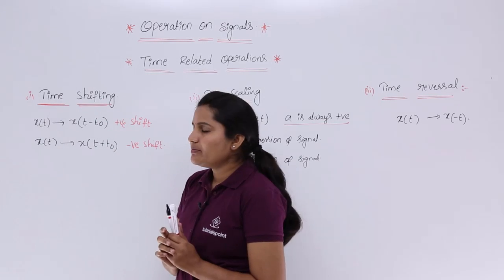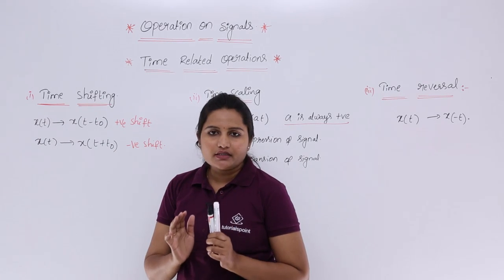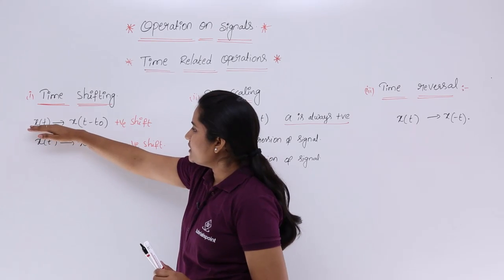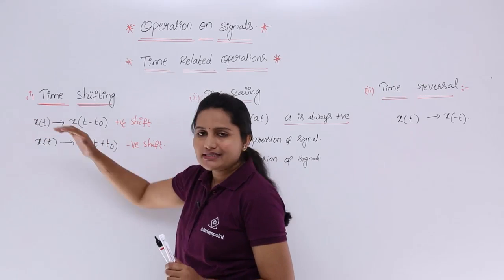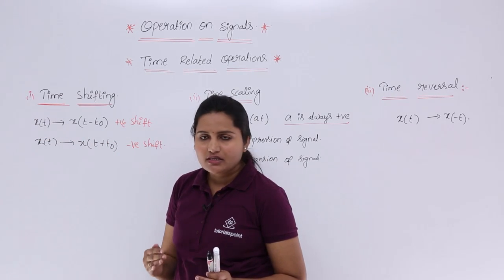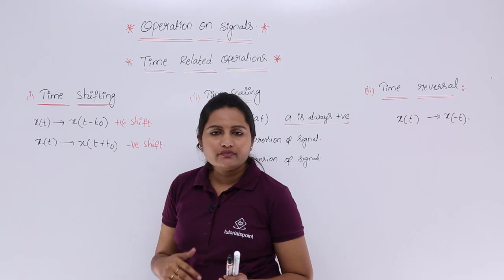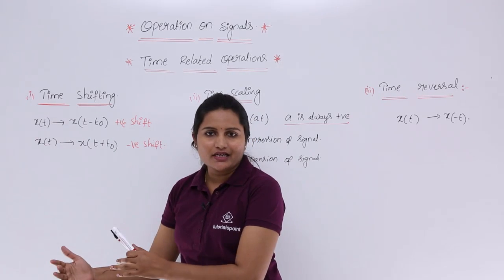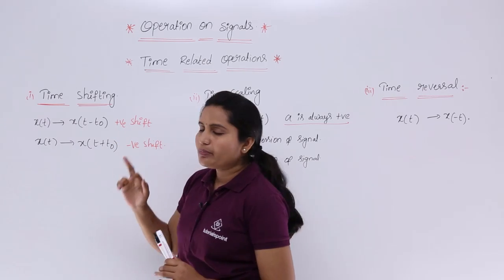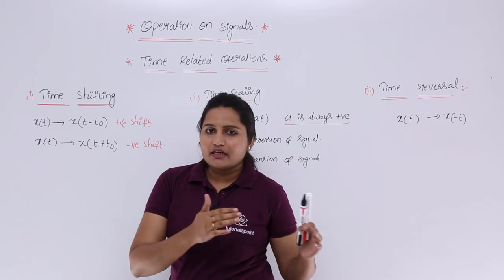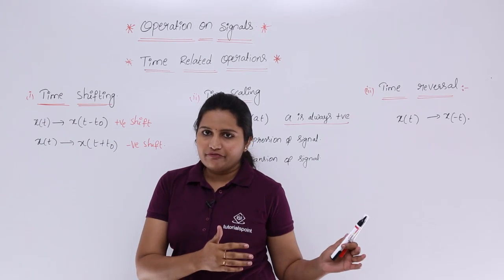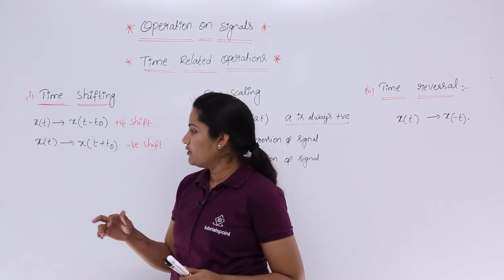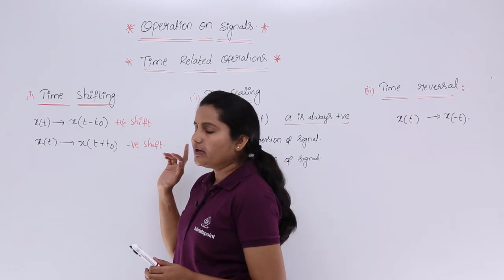Coming to time shifting, we can shift a particular signal to any desired time period. For example, given x(t), we can shift the signal either by a positive shift or a negative shift. If you want to shift in the right direction, you require a positive shift. If you want to shift in the negative axis direction, you require a negative shift.